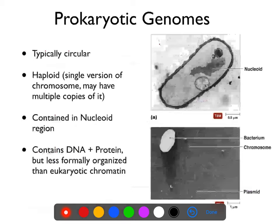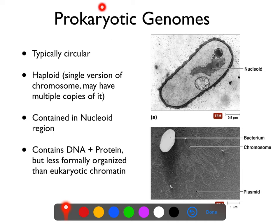Review over. In eukaryotes, the genome is usually arranged in multiple chromosomes which are linear, and depending upon the organism can be either haploid — one copy of each chromosome — or diploid — two copies of each chromosome. Prokaryotes, specifically bacteria — and most archaea, though archaea can be more variable — have a different arrangement.